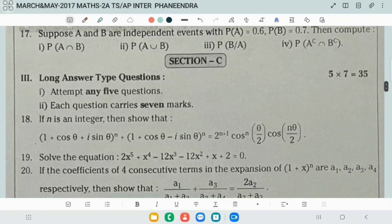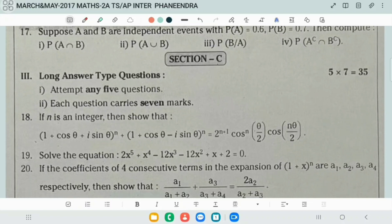Next, suppose here A and B are independent events. P of A, P of B is given, then asking to find P of A intersection B, P of A given B, P of B given A, P of A complement intersection B complement.